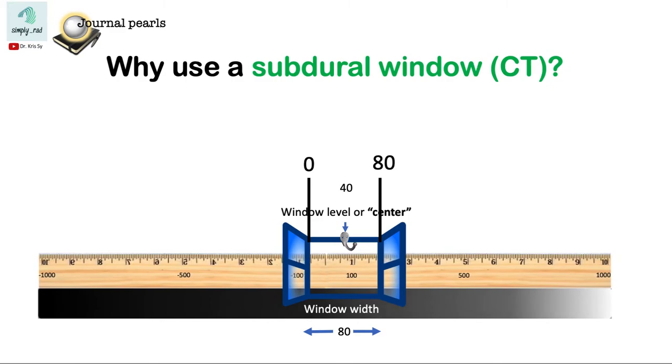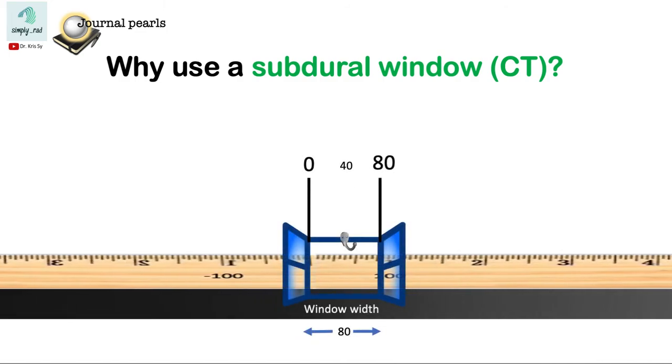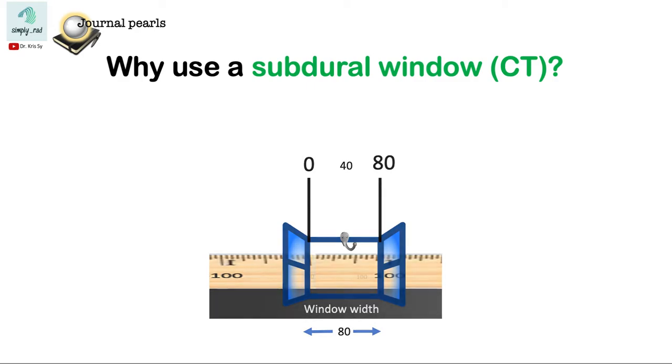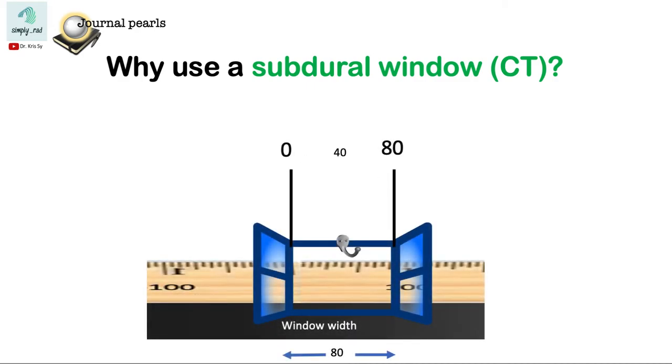Now let's adjust the scale since the ruler should now have 0 at the lower point and 80 at the opposite. Now zooming in a bit. We now realize that both white matter and gray matter are well within this scale and can be visualized in this brain window.